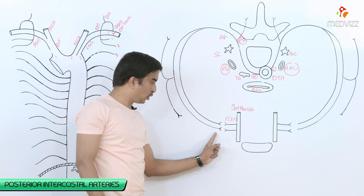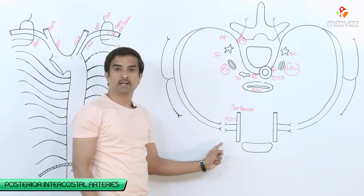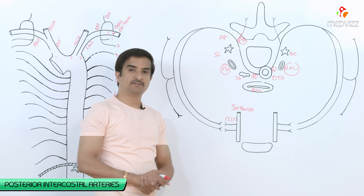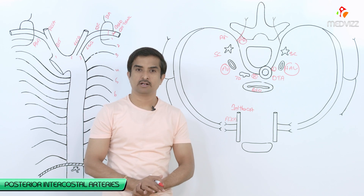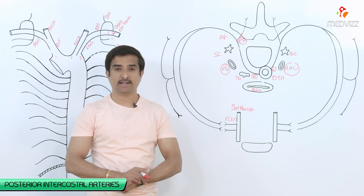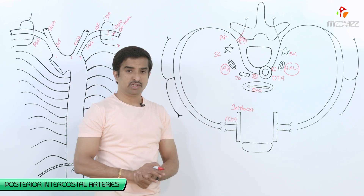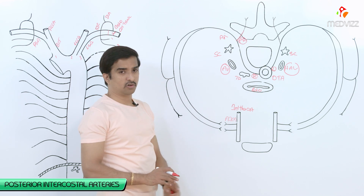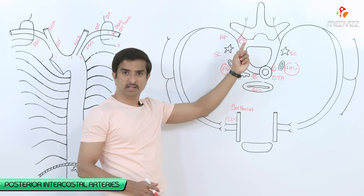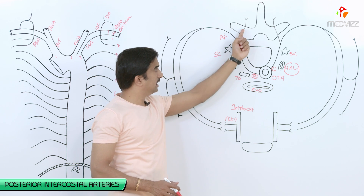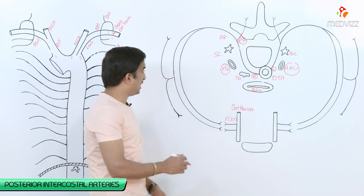The posterior intercostal arteries terminate at the level of the costochondral junction by anastomosing with the anterior intercostal artery, which is a branch of the internal thoracic artery. Regarding branches, the first is the dorsal branch — the posterior intercostal artery gives a dorsal ramus which runs posteriorly and supplies the spinal cord, the vertebrae, muscles, and skin of the back.